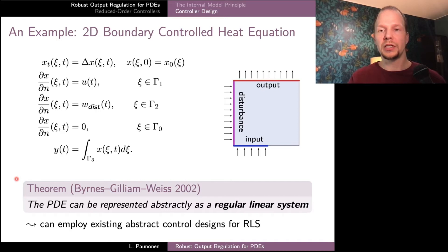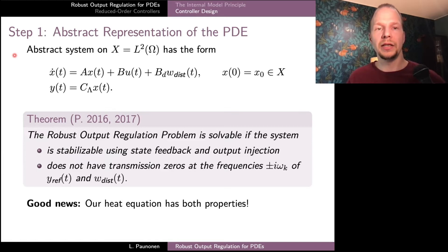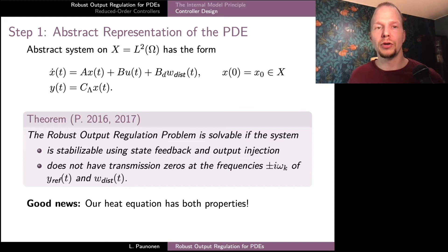Our first step in the abstract controller design is to figure out what class of systems is appropriate for our PDE model. There are existing results on these types of models by Burns, Gillian and Weiss from the early 2000s, which give us the opportunity to represent our PDE as a so-called regular linear system. The existing results tell us that the heat equation can be represented as a distributed parameter system on the L2 space over the rectangular domain, where the input and output operators are unbounded. For this controller design method, it's not necessary to know explicitly what the input and output operators are — we can go through the design process based simply on the knowledge that this representation exists.